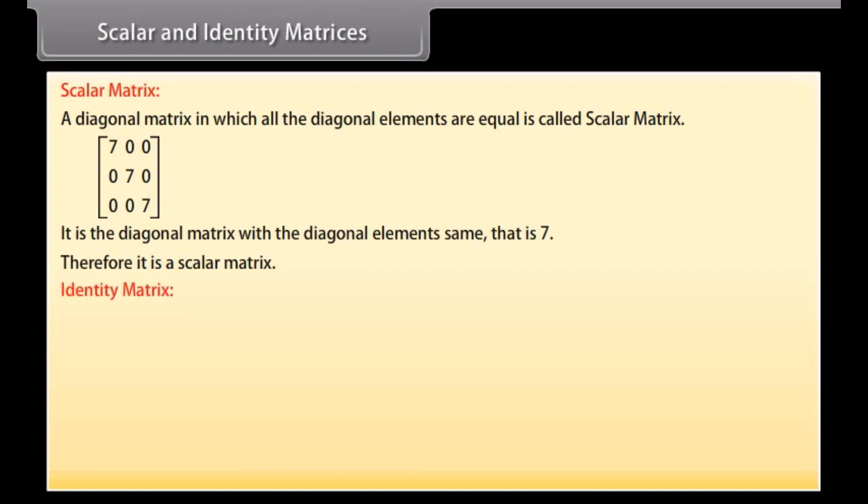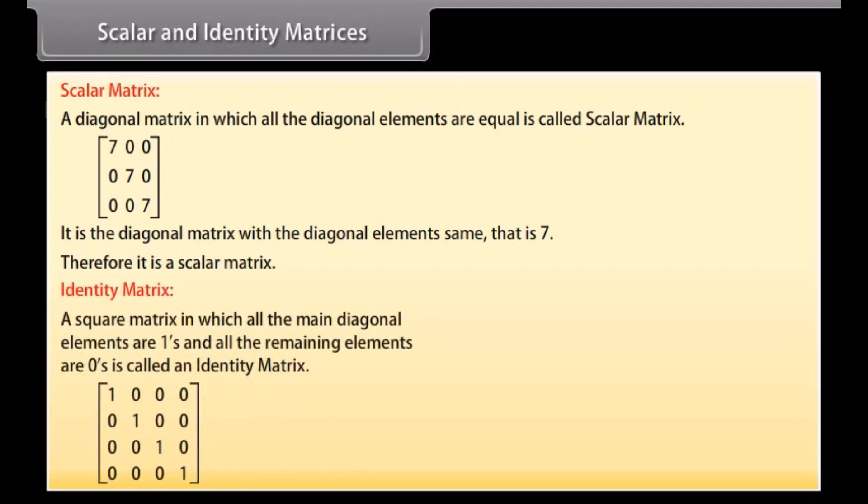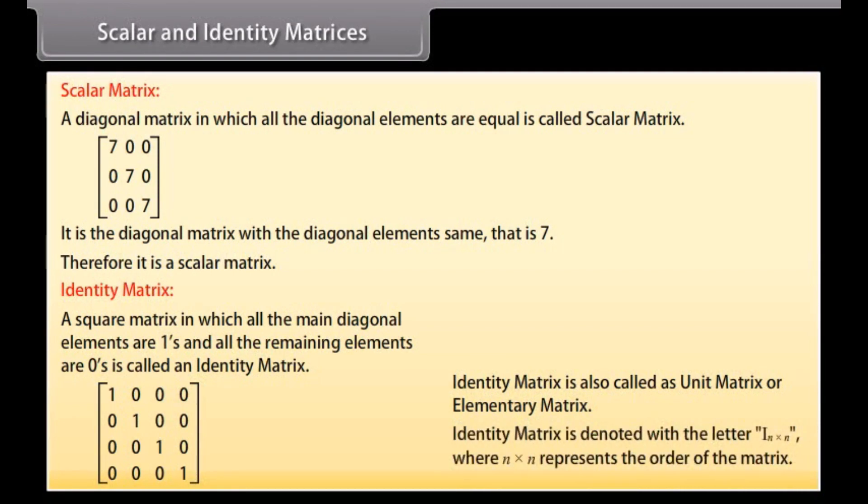Identity matrix. A square matrix in which all the main diagonal elements are 1s and all the remaining elements are 0s is called an identity matrix. Identity matrix is also called as unit matrix or elementary matrix. Identity matrix is denoted with the letter N by N where N by N represents the order of the matrix.